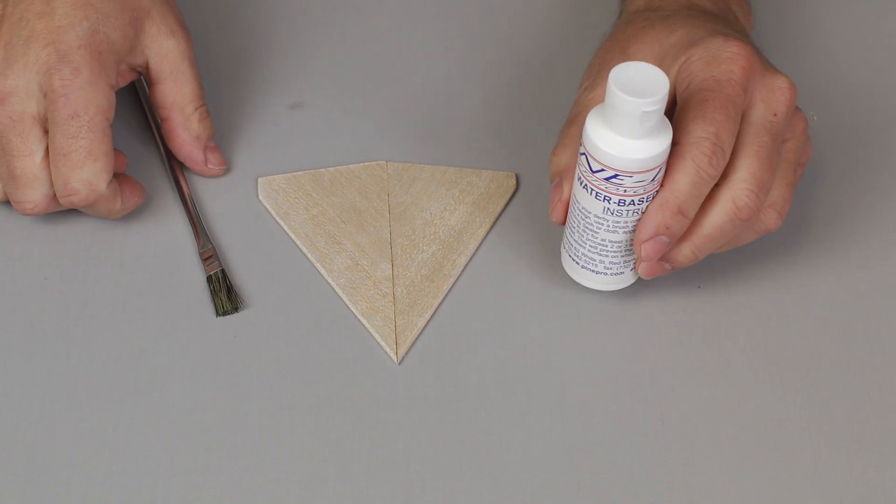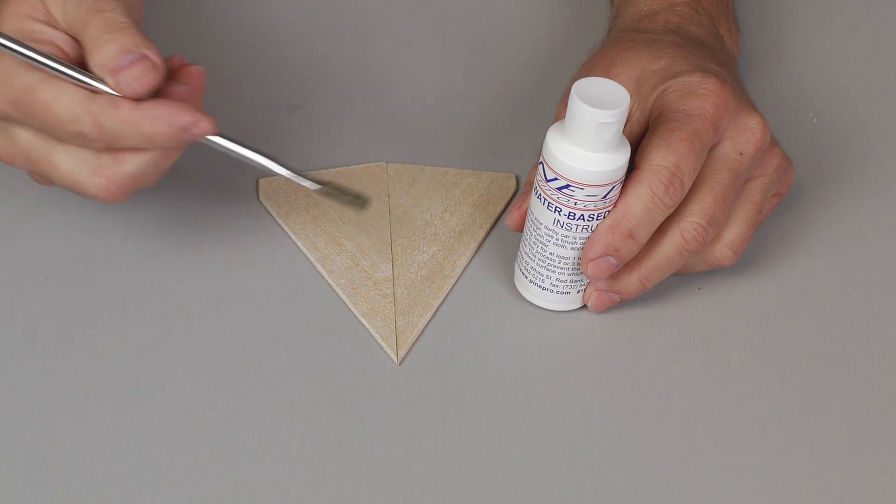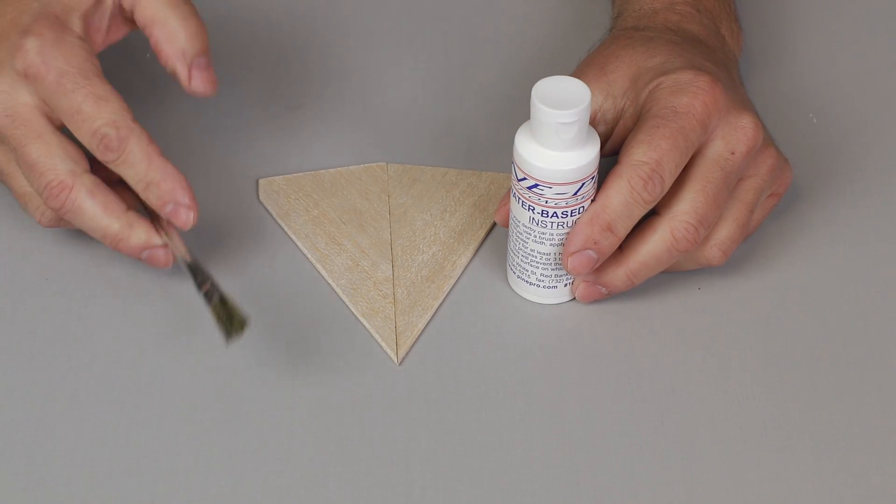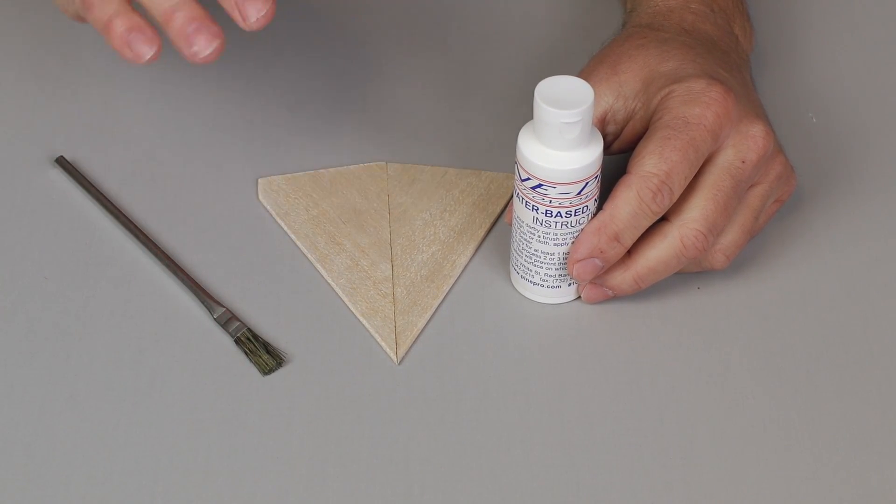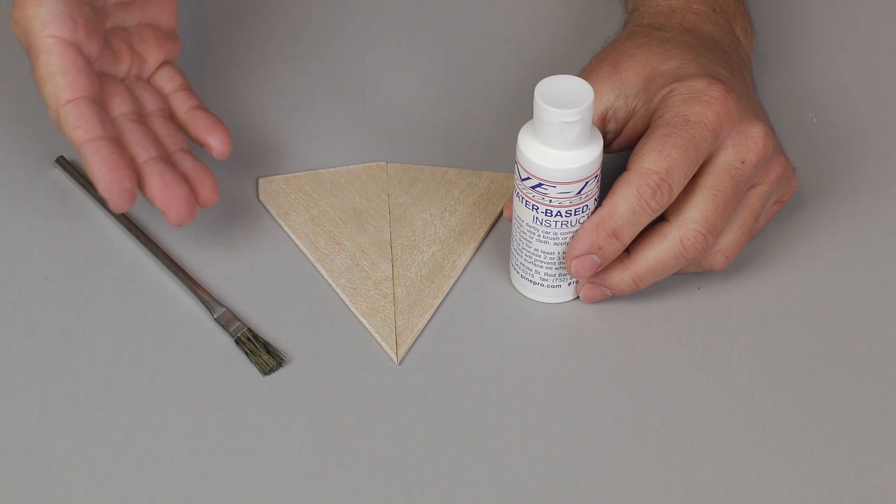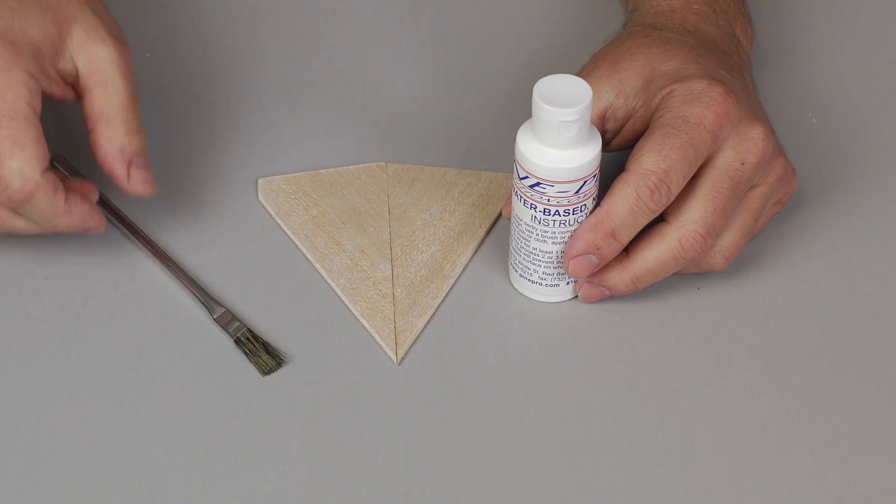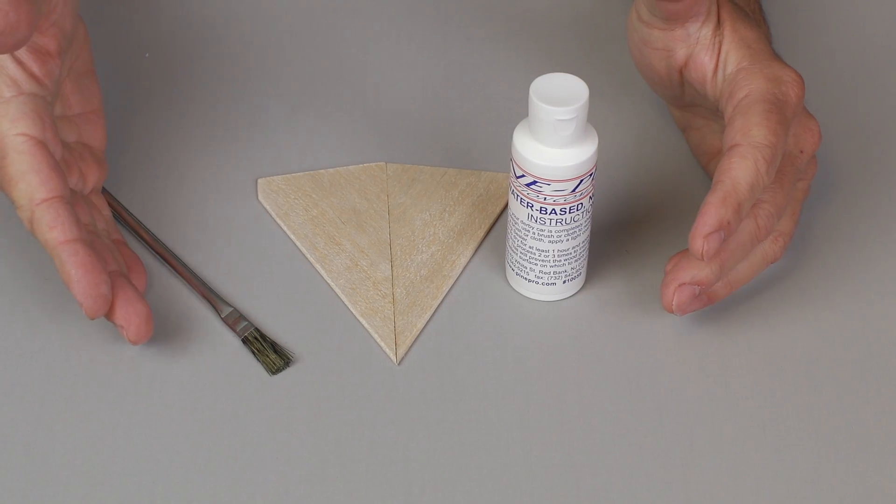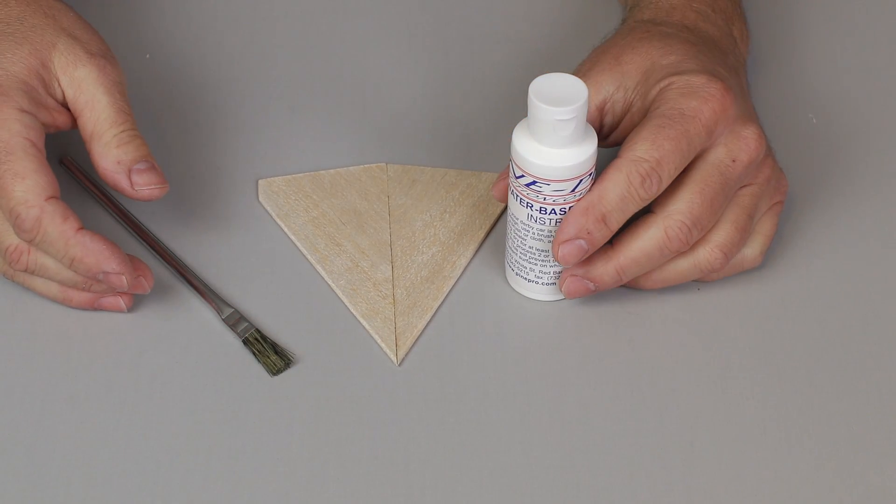On the next step, I'm going to use this sanding sealer, apply a couple of coats on here. And what that will do is it will seal the grain and make the paint nice and smooth. Because the balsa tends to fuzz up a little bit when the paint hits it. This is not necessary, but it really makes your project look nice.